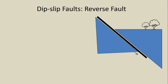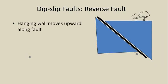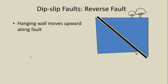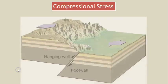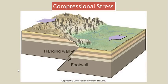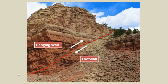If the hanging wall moves upward along a dip-slip fault, it is called a reverse fault. The hanging wall slides upward when compressional stress is acting on the crust. This illustration shows compressional stress causing brittle deformation of the crust and making a reverse fault. Here's a photograph of a reverse fault — note how the arrows along the fault tell us which way the hanging wall and footwall are moving with respect to each other.